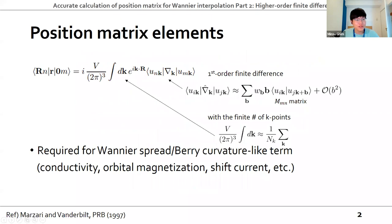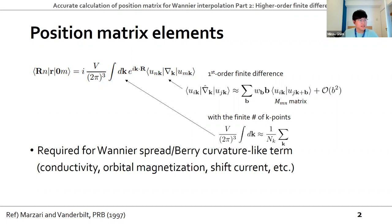We are going to compute these position matrix elements, calculated by this equation. V is the volume of the unit cell, and U_nk is the initial Bloch wave function obtained from the coarse grid calculation. Due to numerical reasons, we should calculate this K integral with a finite number of K points using a discrete K sum, and we also calculate the gradients using the first-order finite difference, which is an approximation.